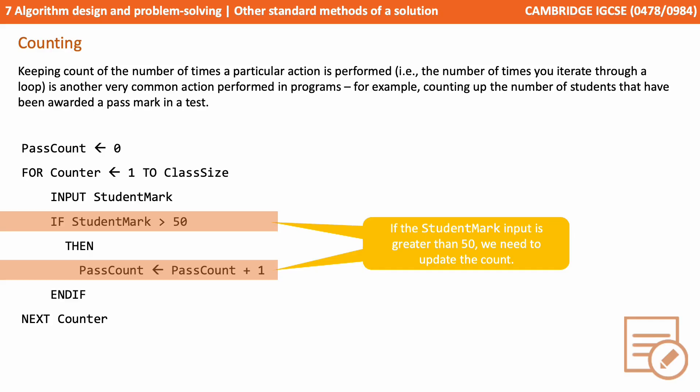And we do that by saying the value currently held in pass count is going to become the value held in pass count plus one, effectively counting up.